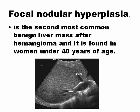Focal nodular hyperplasia is very important. It is benign and it is the second most common benign liver mass after hemangioma. Focal nodular hyperplasia is a little different from normal liver parenchyma.